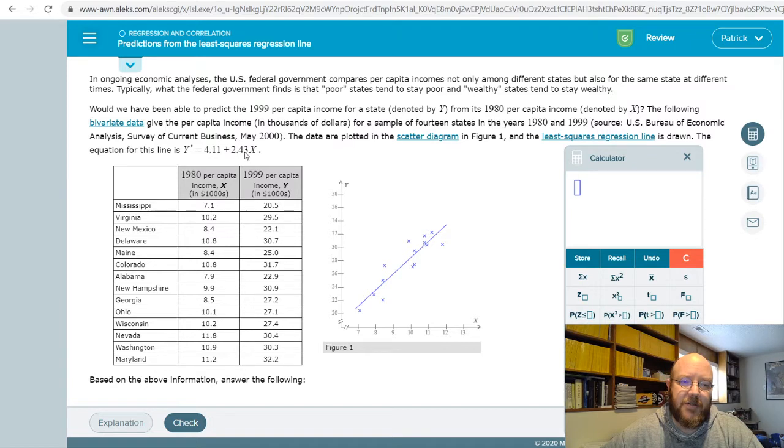And then the next one is our actual slope, so positive 2.43 right here, and then, of course, our x value. So you multiply the slope times the x value, add in this in order to get your predicted value of y.